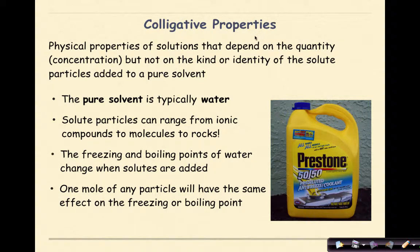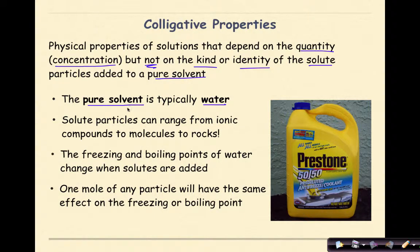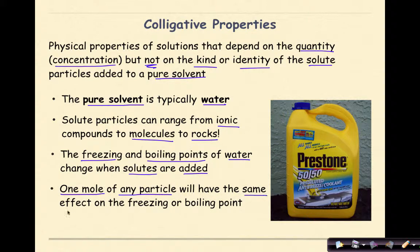So what are colligative properties? They are physical properties of solutions that depend on the quantity or concentration, but not on the kind or identity of the solute particles added to a pure solvent. The pure solvent is typically water, and in many of our examples today we're going to be using water as our solvent. Solute particles can range from ionic compounds to molecules. The freezing and boiling points of water change when solutes are added. One mole of any particle will have the same effect on the freezing or boiling point.